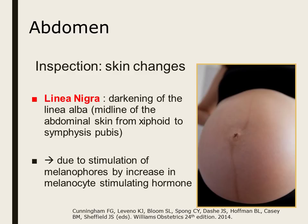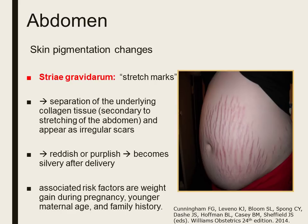On inspection of the abdomen, you might note skin changes, foremost of which is linea negra — the darkening of the linea alba, which is the midline of the abdominal skin running from the xiphoid to the symphysis pubis. This darkening is secondary to stimulation of melanophores by increasing levels of melanocyte-stimulating hormone during pregnancy. Also note stria gravidarum, or stretch marks, secondary to separation of the underlying collagen tissue due to stretching of the abdomen. They appear as irregular scars, reddish to purplish during pregnancy, becoming silvery after delivery.